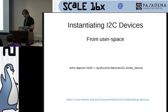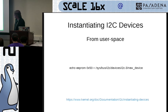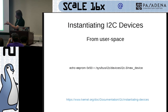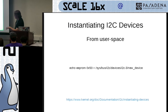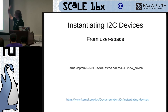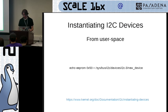There's also a way to instantiate devices from user space, as long as the driver supports it. You echo the driver name and address to the sysfs I2C devices path — for each bus on your system you'll have a different i2c-N and a new_device entry. For all the instantiation methods, there's documentation in the kernel source directly.